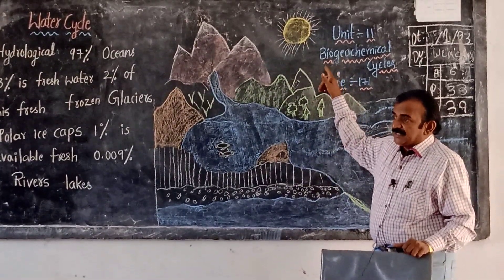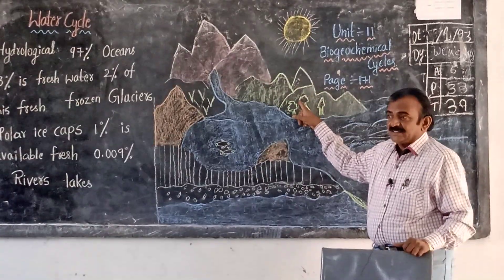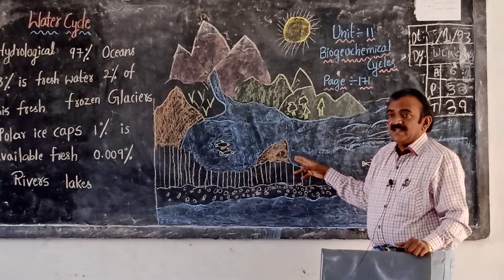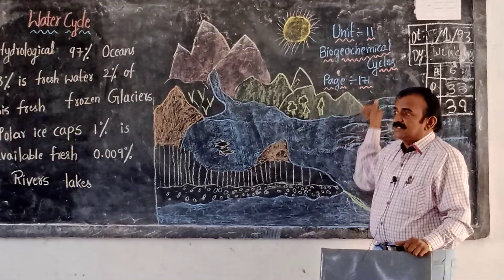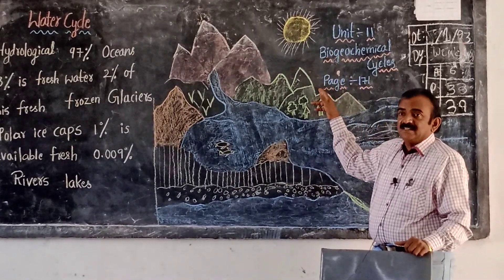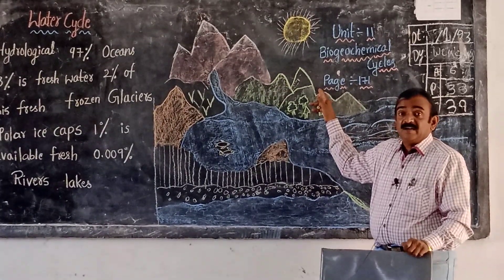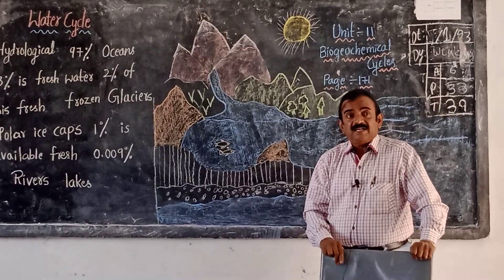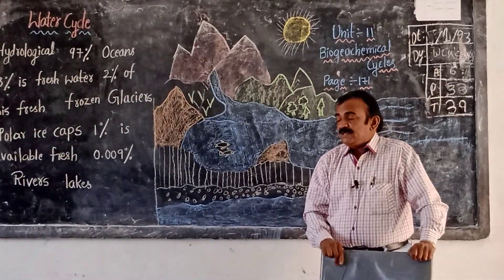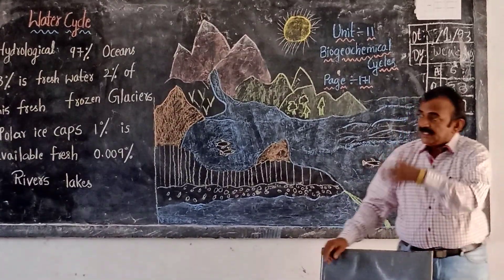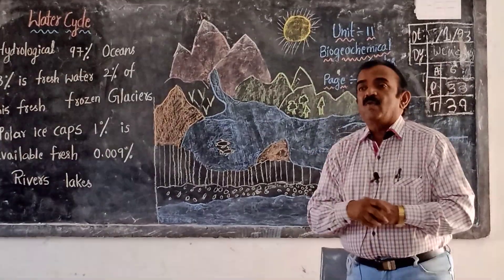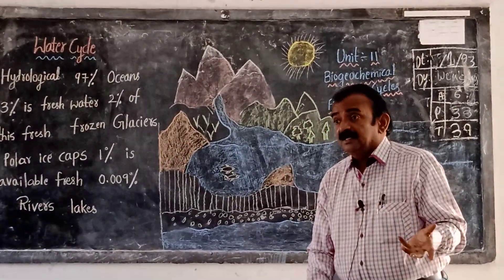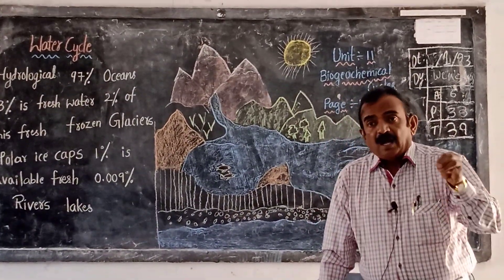That rainfall fills the oceans, lakes, and rivers again. This water is once again evaporated by the heat of the sun, and transpiration takes place through plants. This water vapor reaches the sky, condenses, precipitates, and rain falls again, reaching the water bodies. This is the recycling of water - water is neither added nor destroyed; it always keeps recycling. That is the water cycle.